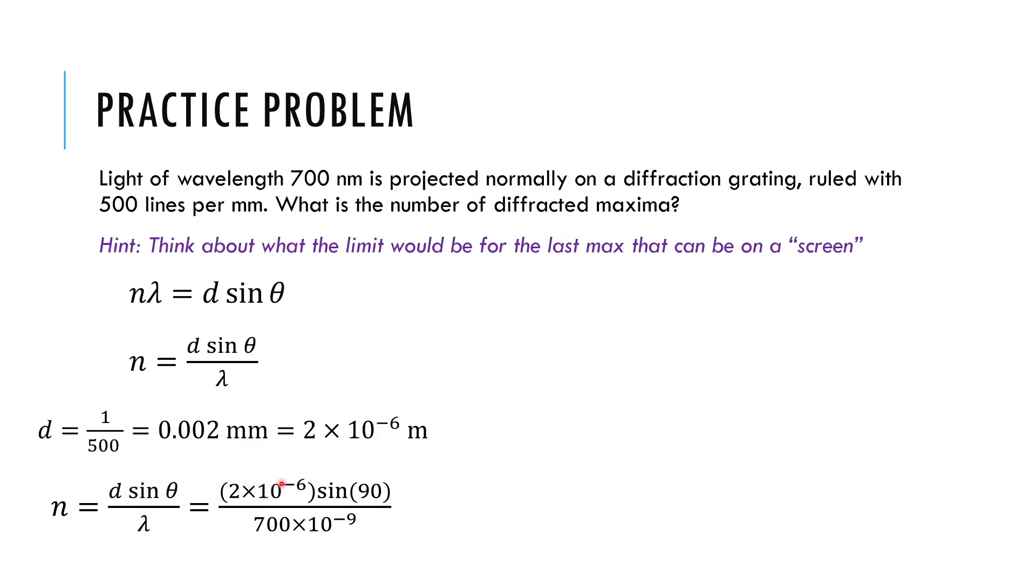Alright. So now I can start plugging things in. That's going to be a little d. I'm going to take the sine of 90 because I want to know if I look 90 degrees. So here's my diffraction grading. If I look all the way to the side, what's the last order of diffraction that I can see possibly? I'm going to plug in the wavelength of light down here, 700 nanometers. Always be careful, of course, with nano. And see what I get is 2.85.